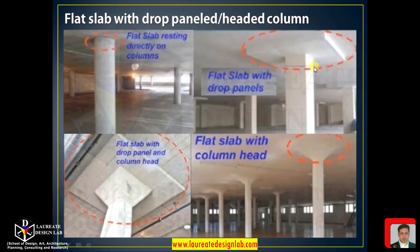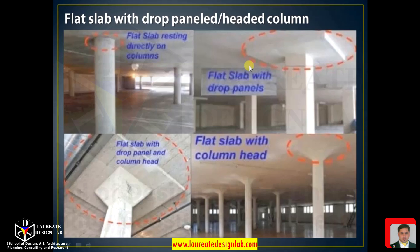These combinations are used when you don't want drop beams — beams that come down maybe one to two feet — because they reduce your headroom. For example, if your ceiling height is 10 feet and you have a one-and-a-half-foot drop beam, you're left with eight and a half feet. With a false ceiling added, you'd barely have seven and a half to eight feet. In such cases, you can use a drop panel, a column head, or a combination of both.